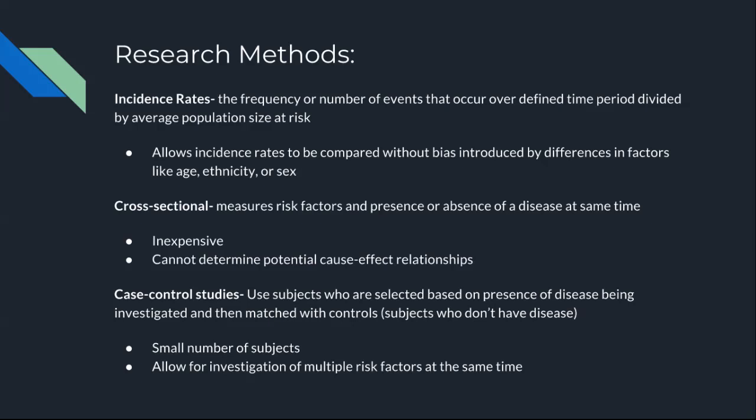There's cross-sectional study, which measures risk factors and the presence or absence of a disease at the same time. It's inexpensive, but it cannot determine potential cause-effect relationships. There's also case control studies, which uses subjects selected based on presence of the disease being investigated and then matched with controls — subjects who don't have the disease. It uses a small number of subjects and allows for investigation of multiple risk factors at the same time.